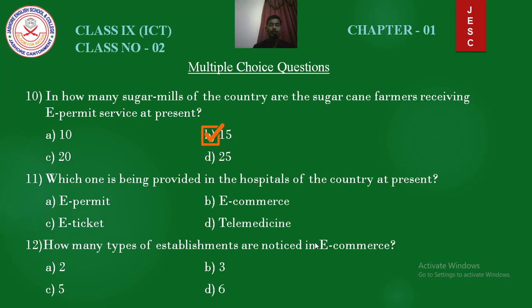Question number 11: Which one is being provided in the hospitals of the country at present? Options: e-permit, e-commerce, e-ticket, telemedicine. Answer is telemedicine. Question number 12: How many types of establishments are noticed in e-commerce? Options: 2 types, 3 types, 5 types, 6 types. Answer is 2 types.